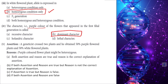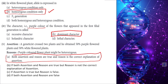A geneticist crossed two plants and obtained 50% purple flower and 50% white flower, meaning it is a test cross. The purple color flower plant might be heterozygous — only when the purple color is heterozygous can we get 50% purple and 50% white. So both assertion and reason are correct, and the reason is the correct explanation.